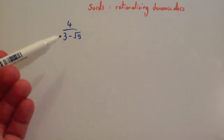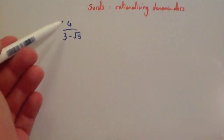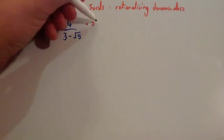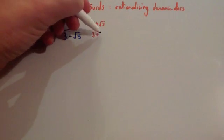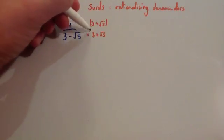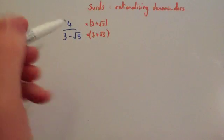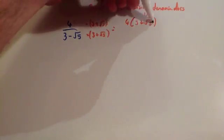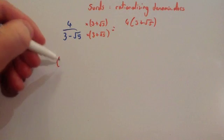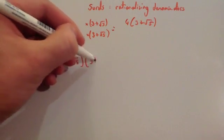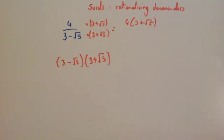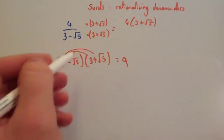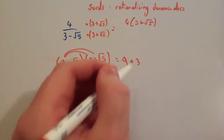So here we've got 4 over 3 minus root 5. We want to times top and the bottom by the conjugate of the denominator. We have 3 minus root 5, so we're going to times both the top and the bottom by 3 plus root 5. The top line is quite straightforward — it's going to become 4 bracket 3 plus root 5. And then the bottom line: we would have 3 minus root 5 times 3 plus root 5. So we expand it. 3 times 3 is 9. 3 times root 5 would be plus 3 root 5. Minus root 5 times 3 would be minus 3 root 5.